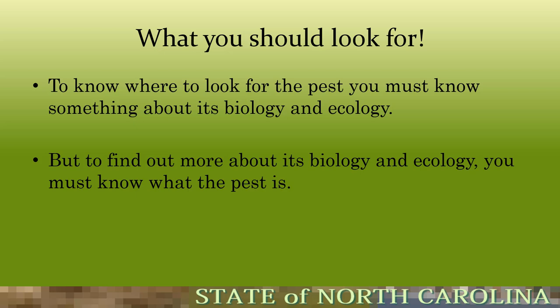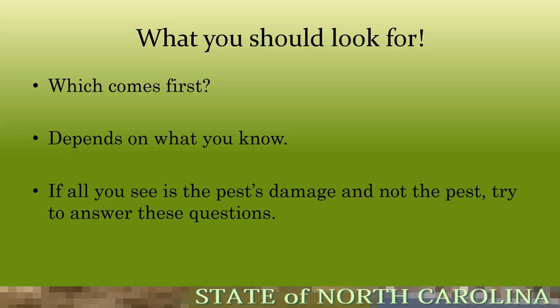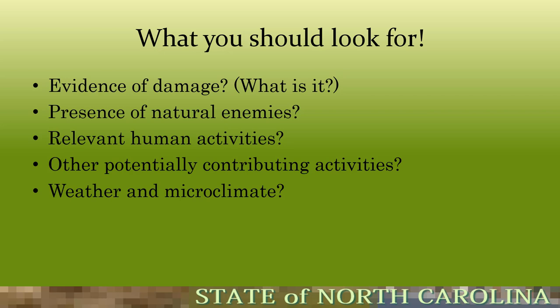To know where to look for pests, you must know something about their biology and ecology — and to know that, you must first identify the pest. Misidentification is the number one reason we fail as pest managers. If you see damage but not the pest, try to answer these questions: What is the evidence of damage? Are natural enemies present? Are there relevant human activities contributing to the problem? What is the weather and microclimate? These answers help guide correct identification and management.